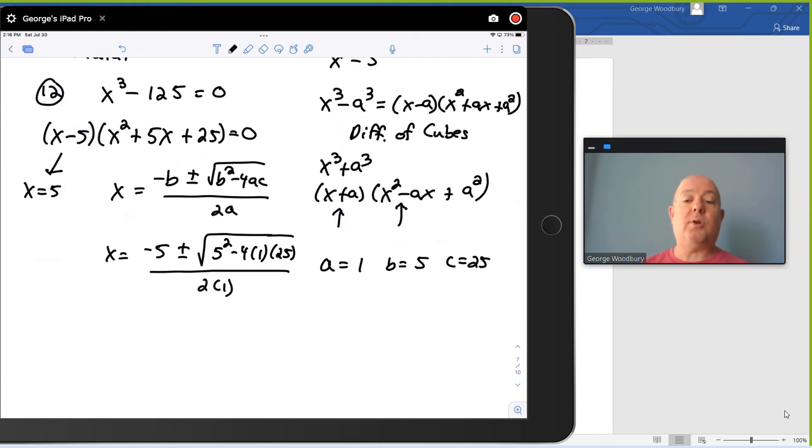The radicand: 5 squared is 25, 4 times 1 times 25 is 100, so we've got 25 minus 100, that's negative 75. So x equals negative 5 plus or minus square root of negative 75 over 2.